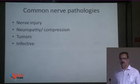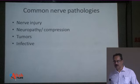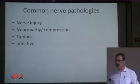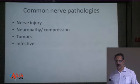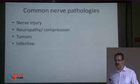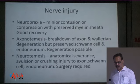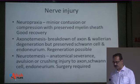Various nerve pathologies that can be diagnosed on ultrasound include nerve injury, entrapment or compression neuropathies, tumors, and infective pathologies of the peripheral nerves.